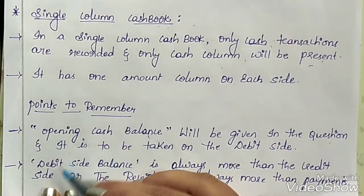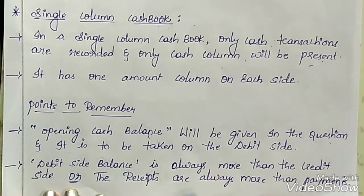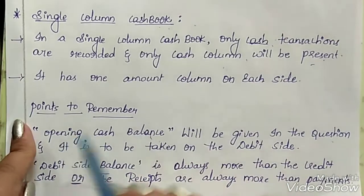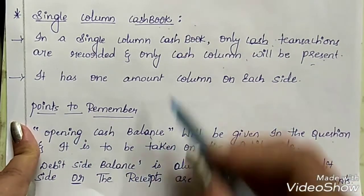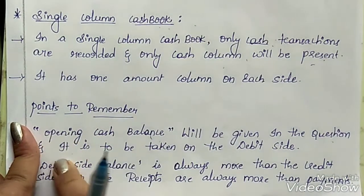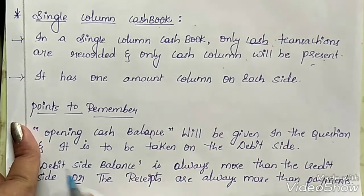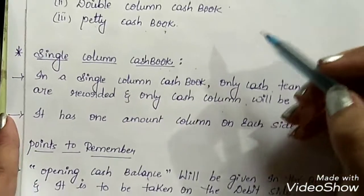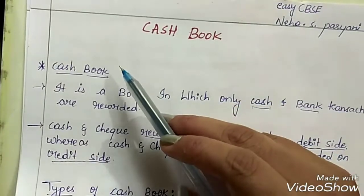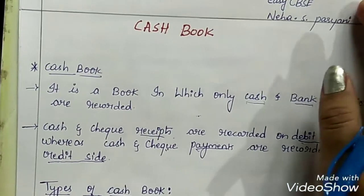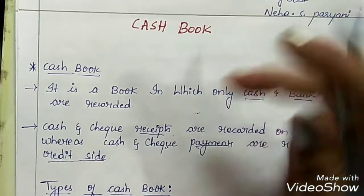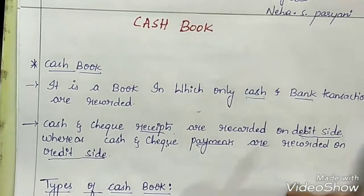Another important point: the debit side balance is always more than the credit side, meaning receipts are always more than payments. Also remember that the cash book serves the purpose of both the journal book and the ledger.